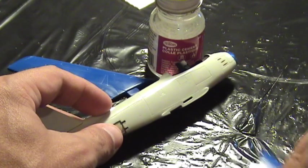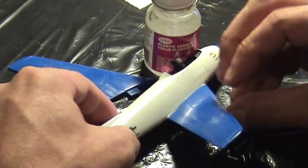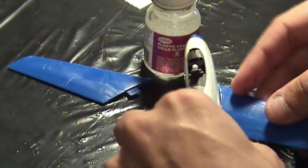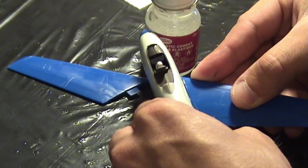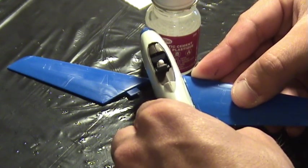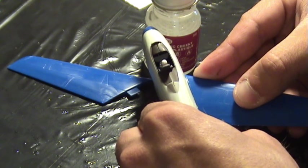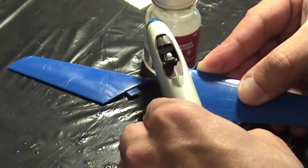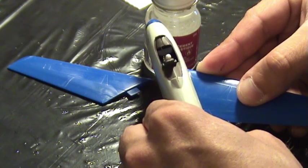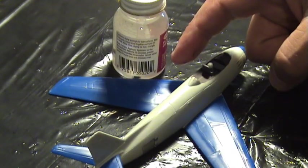Insert the wing in the slot and hold it in place, applying some pressure. The liquid cement will dry quickly. Follow the same procedure with the other wing.